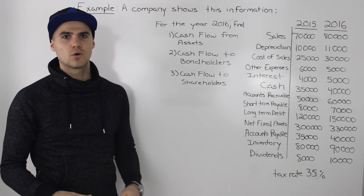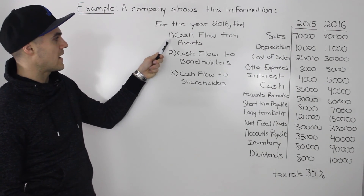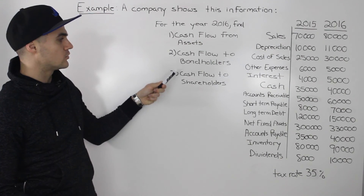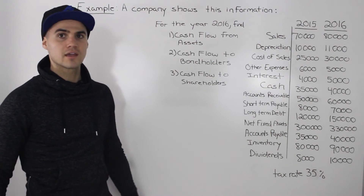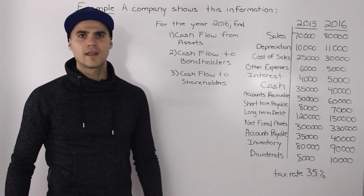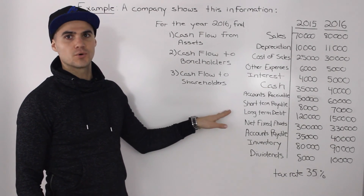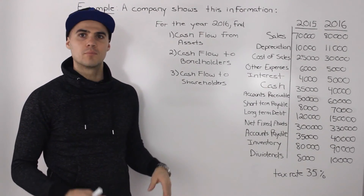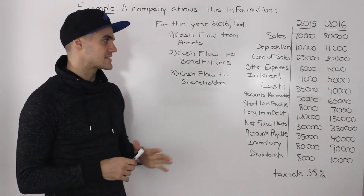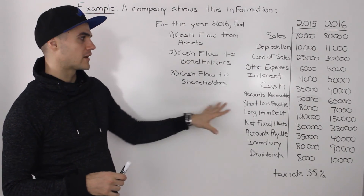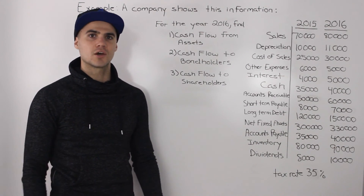What's up everybody? In this video, we're going to do another example in finding the cash flow from assets to bondholders and to shareholders given all this information about a company. And as you can see, lots of information given in this example. In case you don't want to write it out, I put a link to lecture notes in the description box below that has this example already written out for you, so you may want to print those out before continuing this video.